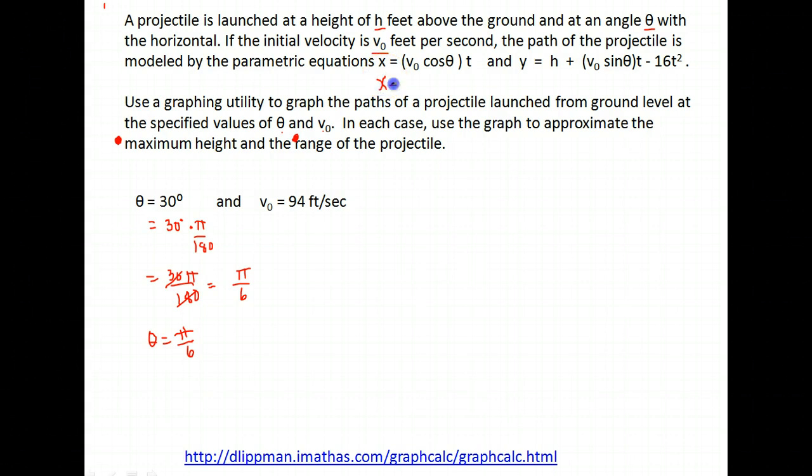Now for my x it's supposed to equal v naught, so my initial velocity which they are telling me is 94 feet per second. So I would have 94 times cosine of my angle which was 30 degrees, which again I'm going to use radian measure so pi over 6 radians t. Here's my first parametric equation, x is equal to 94 cosine pi over 6 t.